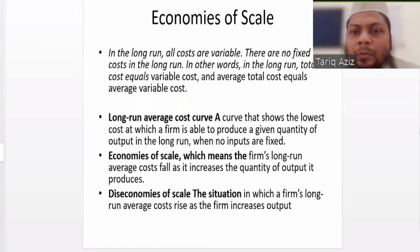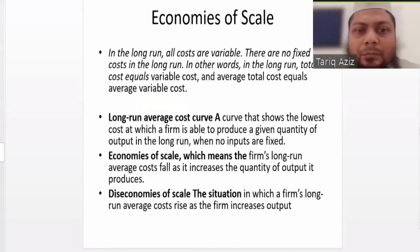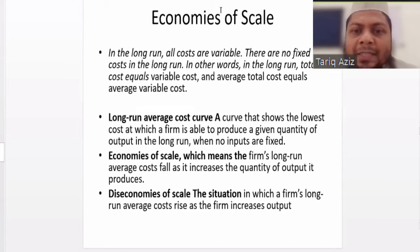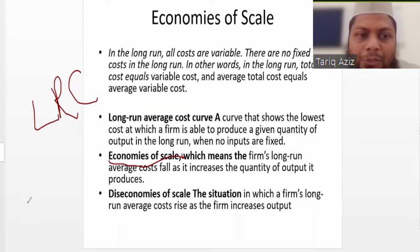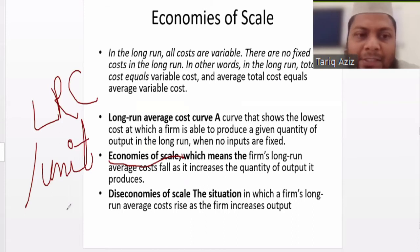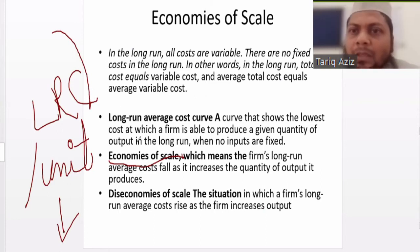Economies of scale means when we increase the level of production — the size of the production — and per unit cost decreases as a result of the increase in the scale of production, that situation is called economies of scale. If the long run average cost of a firm is falling as a result of increasing the level of production, we can say that the firm is experiencing economies of scale.